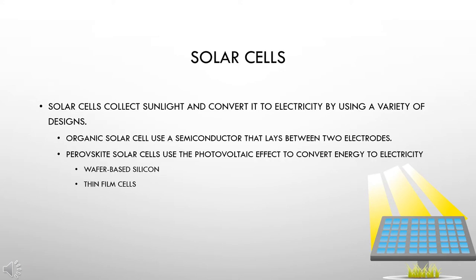Solar cells. Solar cells collect sunlight and convert it to electricity by using a variety of designs. There are organic solar cells which use a semiconductor that lays between two electrodes. There are also perovskite solar cells that use the photovoltaic effect to convert energy to electricity.